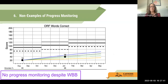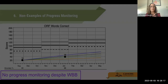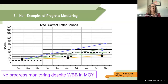Another non-example: a student who is well below benchmark has fall and winter benchmark scores, yet no progress monitoring data in between. This is not good practice and also currently does not follow Utah State law. This student should be monitored every week or every other week since they're well below benchmark — we should have data on every data point between the fall and winter benchmark. Similarly, another student has no progress monitoring either. Perhaps in fall they were just below benchmark, but certainly by the winter benchmark where they fell well below, they should have begun progress monitoring on a weekly or every-other-week basis.